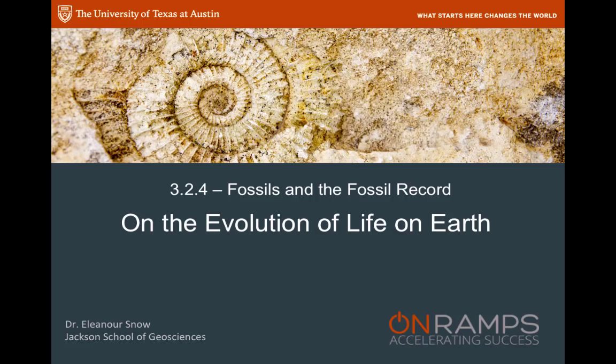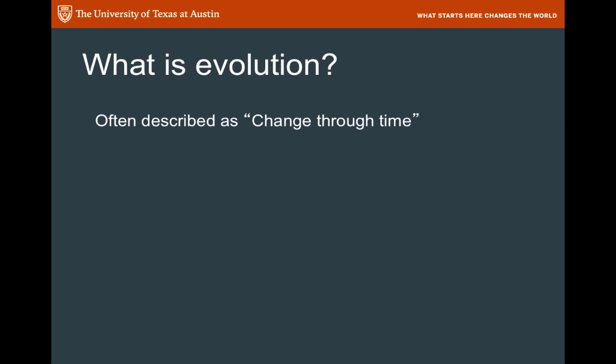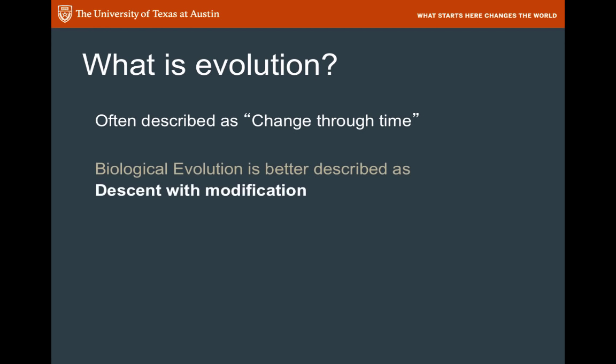Today we're talking about evolution of life on Earth and about fossils and the fossil record. What is evolution? Evolution is often described as change through time, and that's a pretty apt description, but a better one is to think about biological evolution as descent with modification — each subsequent generation is modified a little bit from the previous generation, and so species over time change.